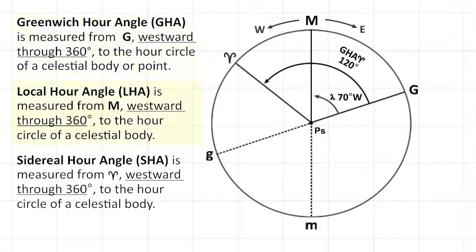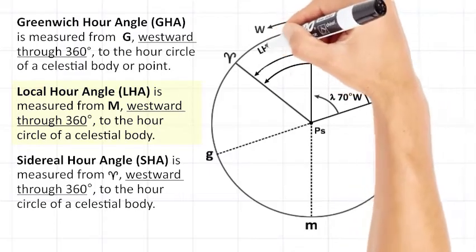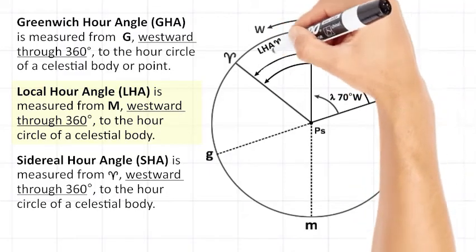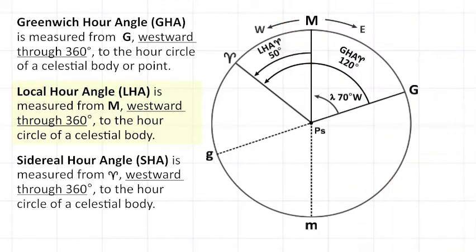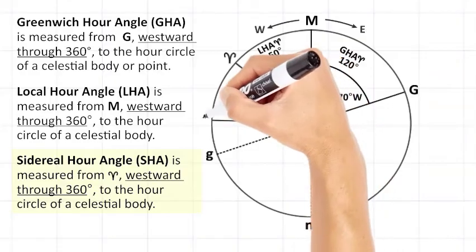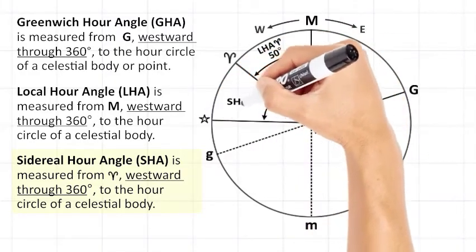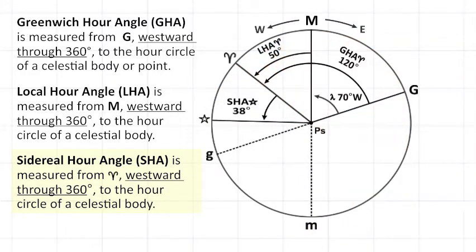The local hour angle, abbreviated to LHA, is measured from M westward to the hour circle of a celestial body or point. The sidereal hour angle, abbreviated to SHA, is measured from the hour circle containing the first point of Aries westward to the hour circle of a celestial body.